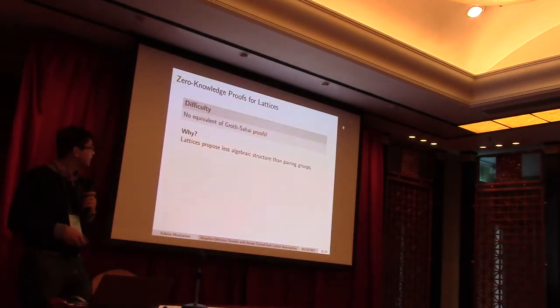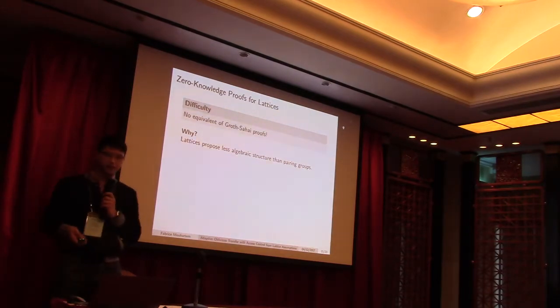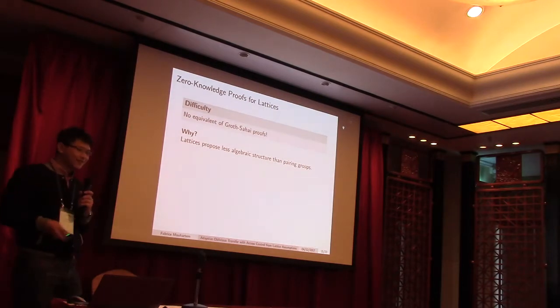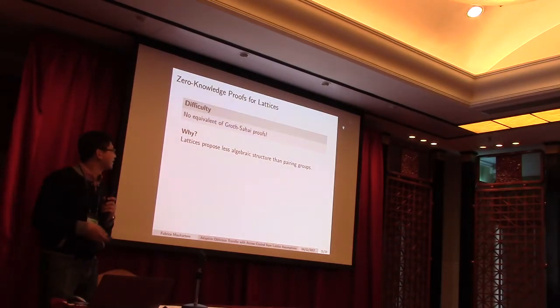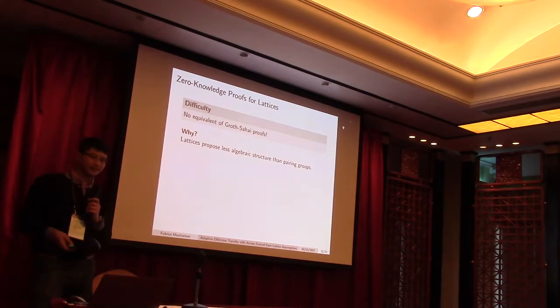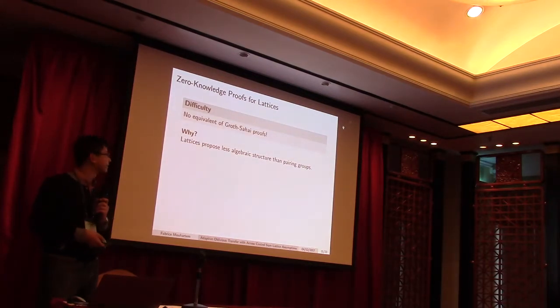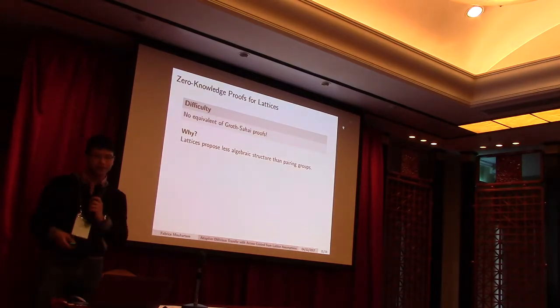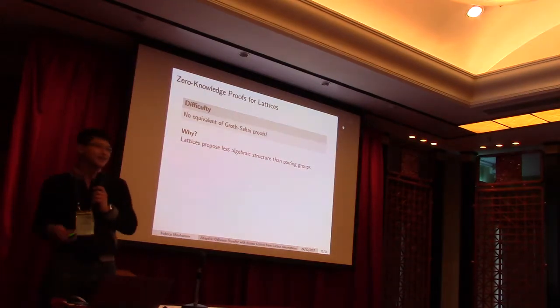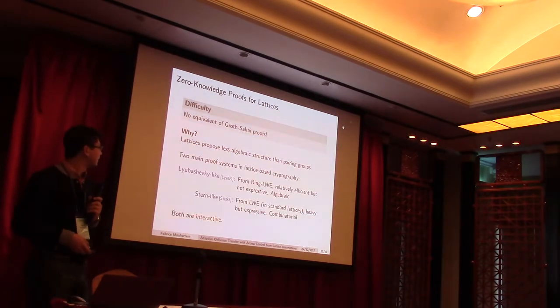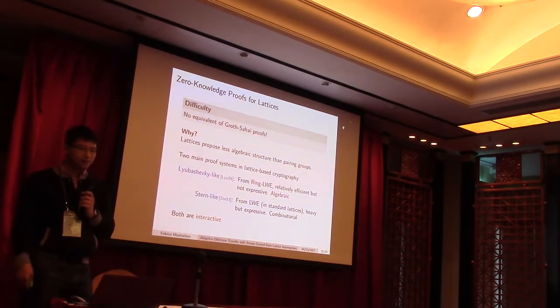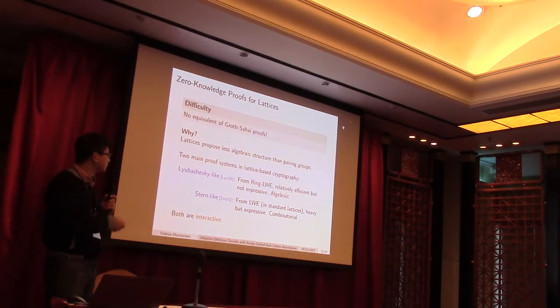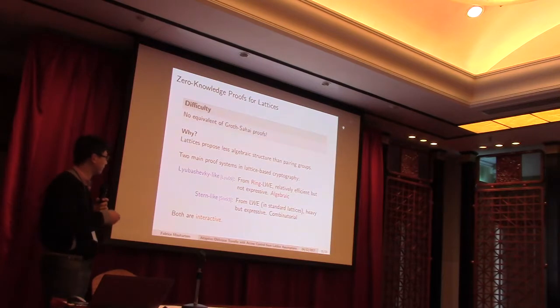So, I think that in the next setting, as I said, we use the Stern-like argument of knowledge, because there is something that, I mean, there is no equivalent of, there is no non-interactive and expressive zero-knowledge proofs. So, basically, there is no equivalent of Groth-Sahai proofs, because lattices have less structure than pairings.